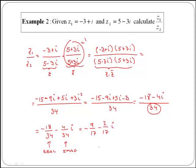So if you realize, you started with the division of two complex numbers given in Cartesian form, and you ended up with a single complex number given in Cartesian form, which has real part equal to minus 9 over 17 and imaginary part equal to minus 2 over 17.